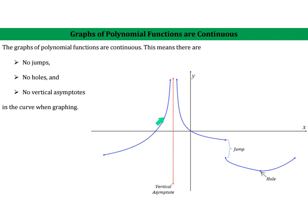If I were to trace the curve, I would have to lift my pencil from this branch to this branch, because there is something called a vertical asymptote. I would also have to lift my pencil here because of a jump, or at the hole, I would have to lift my pencil. The key thing is that a polynomial does not have any of these types of discontinuities — no vertical asymptotes, no jumps, no holes.